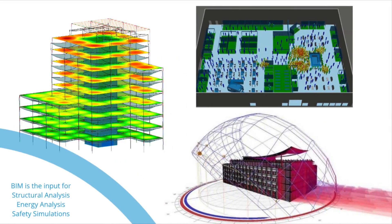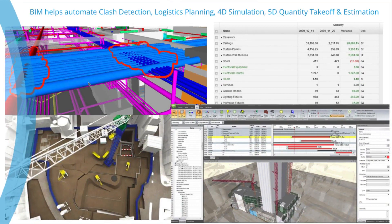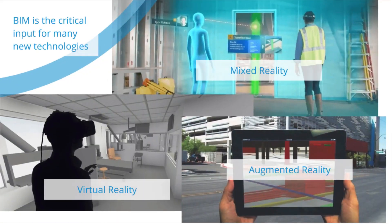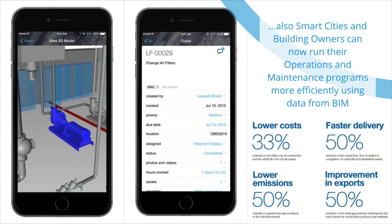BIM is the input for many types of building analysis, such as structural analysis, energy analysis and occupancy simulations. BIM can automate finding problems in the design, automate quantity takeoff for rapid estimating, and help create 4D schedule simulations and 3D logistics plans. BIM is the critical input supporting the recent explosion to experience virtual worlds. BIM is used for virtual reality, augmented reality and mixed reality. Smart cities and building owners can now use BIM to drive data more efficiently into building management systems and provide building occupants a better experience.